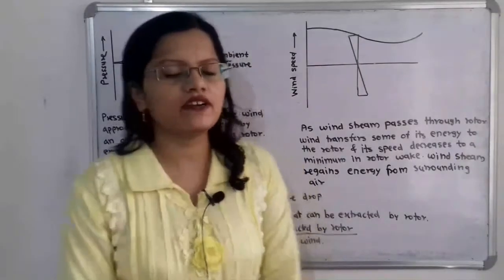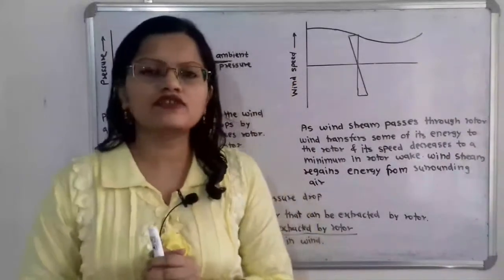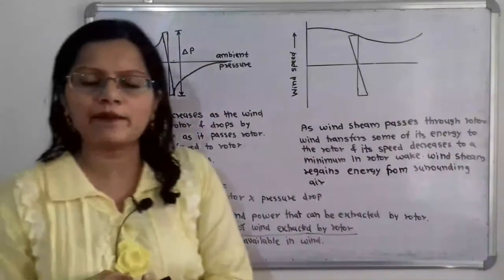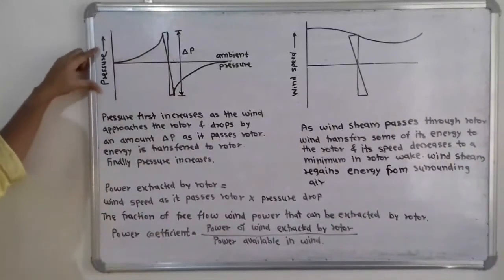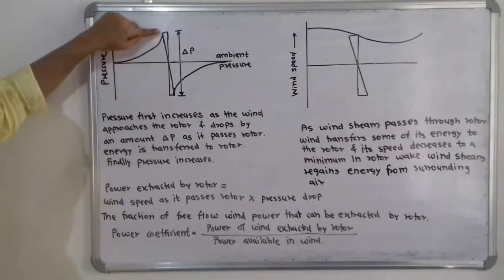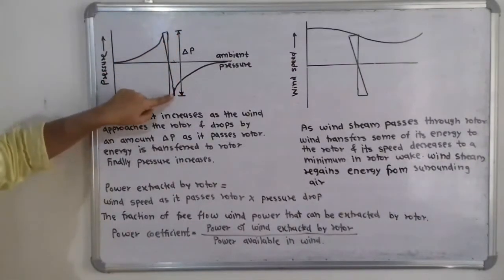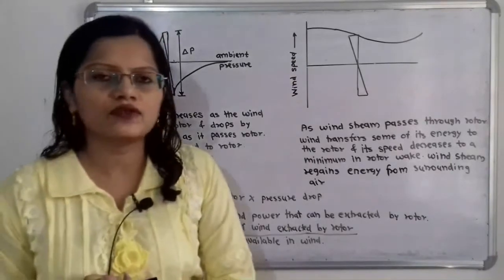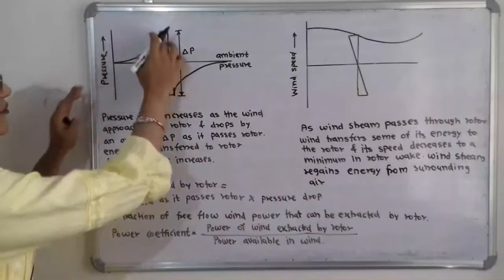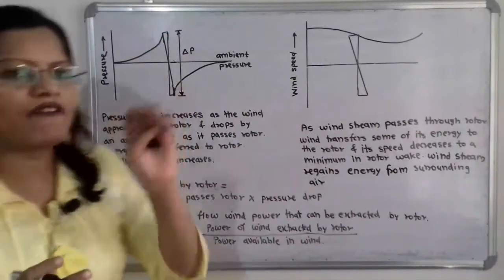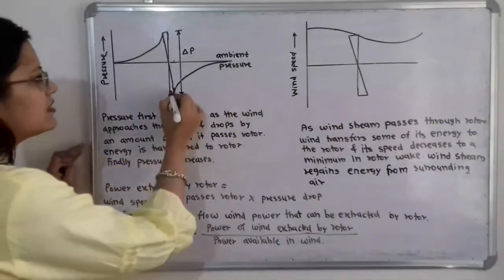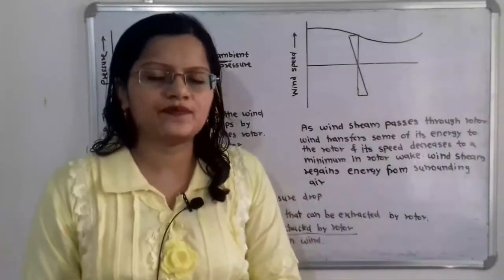Now we will study the effect of wind pressure and wind speed as it passes through the rotor. The horizontal line in the diagram indicates the ambient pressure. The pressure first increases as it approaches the rotor, then drops by an amount delta p (Δp) as it passes through the rotor — this energy is transferred to the rotor. After a sufficient distance from the rotor, the pressure is regained back to ambient pressure.